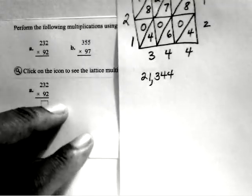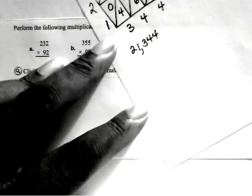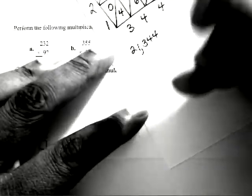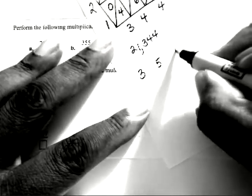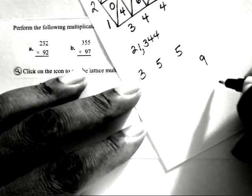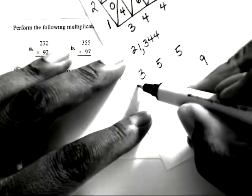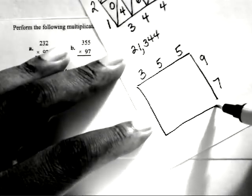Now let's look at the next one, part B. That's done the same way, 355 times 97. So I know I have a 3-digit number times a 2-digit number, which is 97. So I'm going to need 6 boxes set up like this.